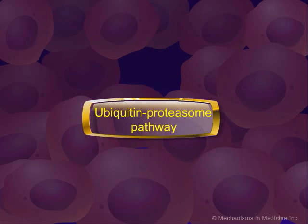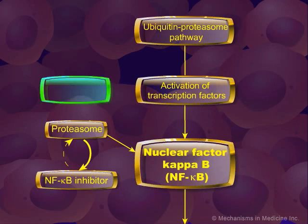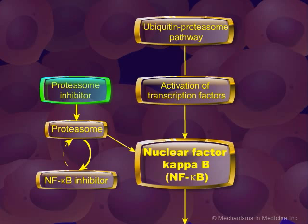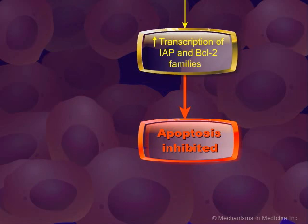The ubiquitin-proteasome pathway regulates the expression of transcription factors and other cell cycle proteins. Certain molecules can suppress NF-kappa-B and AP-1 activation and inhibit tumor promotion. Bortezomib, or Velcade, is a proteasome inhibitor that has shown promising results in multiple myeloma. It inhibits the proteasome, which leads to increased levels of the NF-kappa-B inhibitor and therefore less anti-apoptotic proteins.